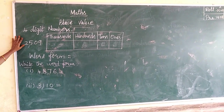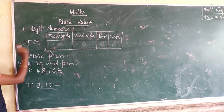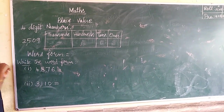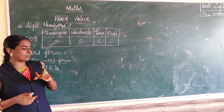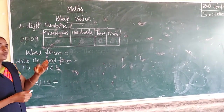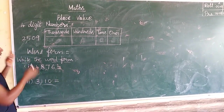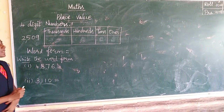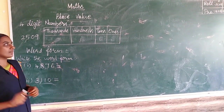Let us take the number 2509. In the previous class we did 3-digit place value. Now we are using commas. Let's see how to use the commas.